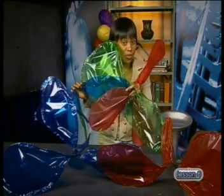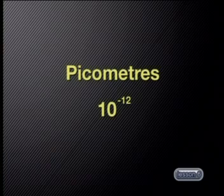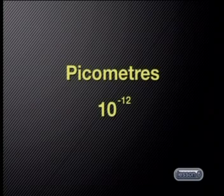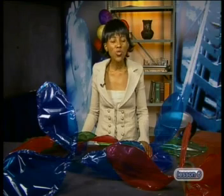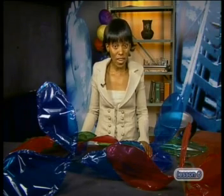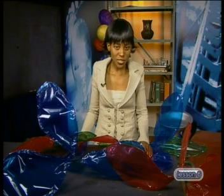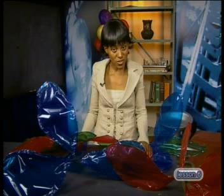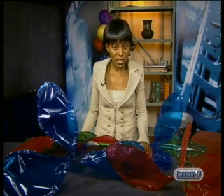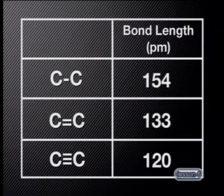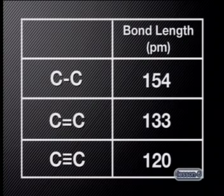Let's check the data chemists have recorded using X-rays. Bond lengths are measured in picometers — that's 10 to the minus 12 metres, or a million million times smaller than a metre. This is an extremely small distance, smaller than the wavelength of light, which is why an optical microscope cannot detect chemical bonds. X-rays have a much smaller wavelength and can be used to measure bond lengths very accurately. The data clearly shows that bond length decreases with an increasing number of bonds, confirming the relationship suggested by the models.